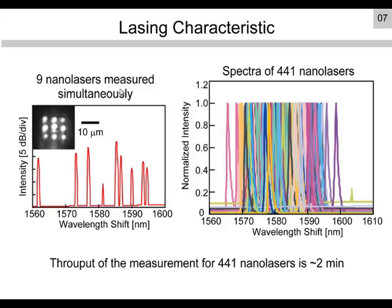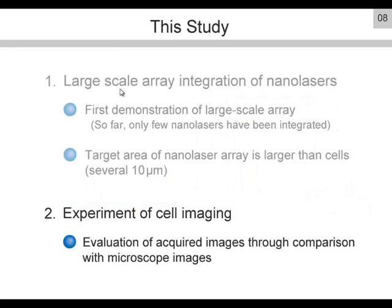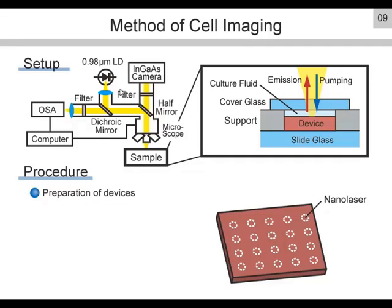This shows the total spectra of 441 nanolasers, where each peak wavelength is automatically detected. Next, I will talk about cell imaging. This is the experimental setup. The sample is pumped by a 0.98-micron pulsed laser through a microscope and objective lens. The laser emission is detected through the same setup, observed by an infrared camera and measured by an optical spectrum analyzer. The excitation position and spectral analyzer are controlled for automatic measurement. The device is fixed on a slide glass surrounded by supports so that measurement can be done in culture medium.